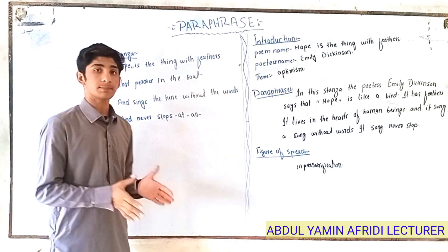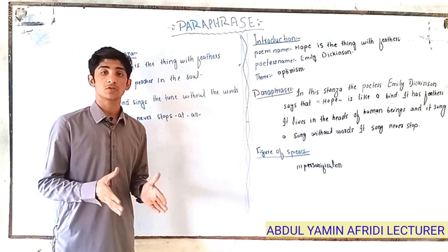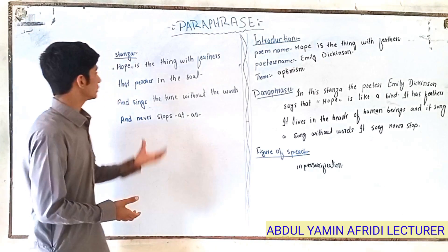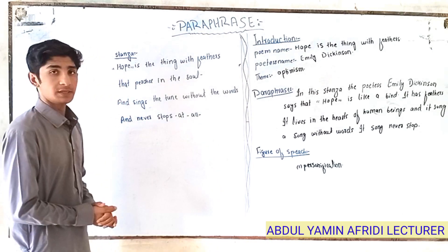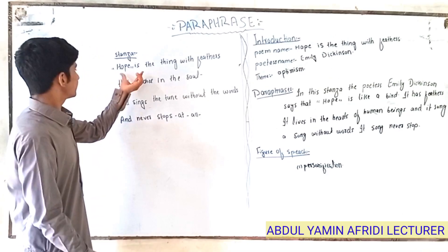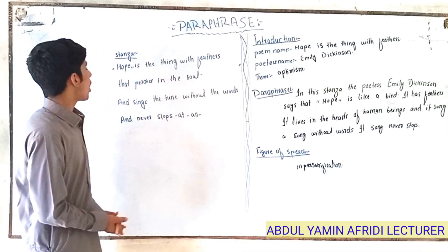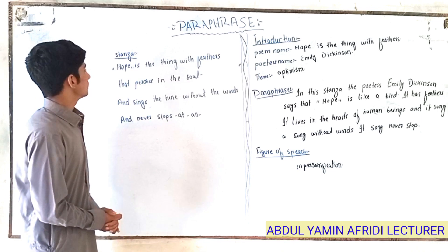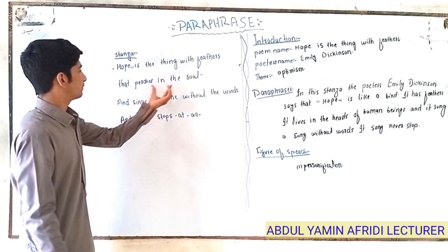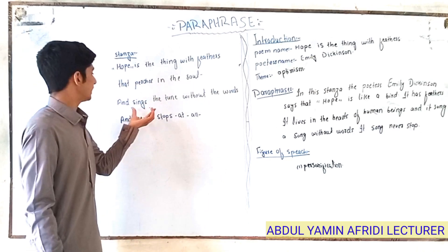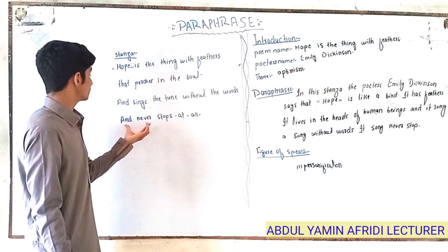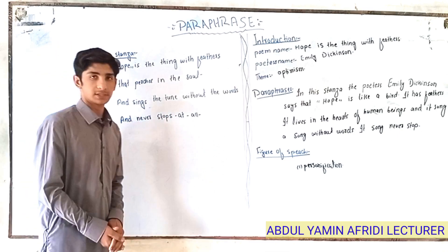What is a stanza? A stanza is a part that consists of four or six lines. So this one stanza will be, for example, the stanza says: 'Hope is the thing with a feather that persists in the soul and sings the tune without the words and never stops at all.'